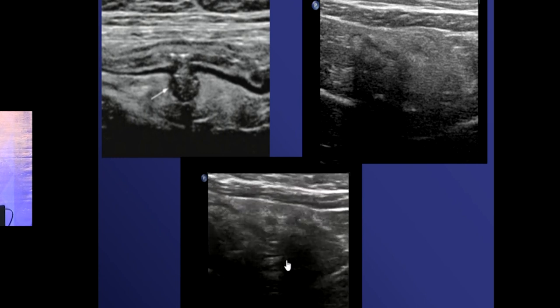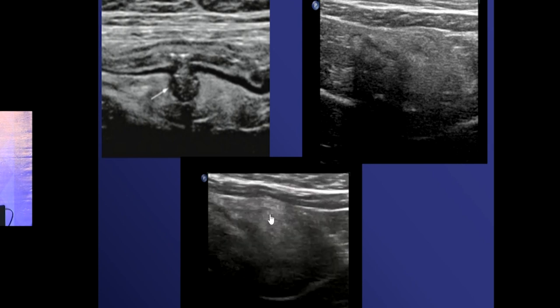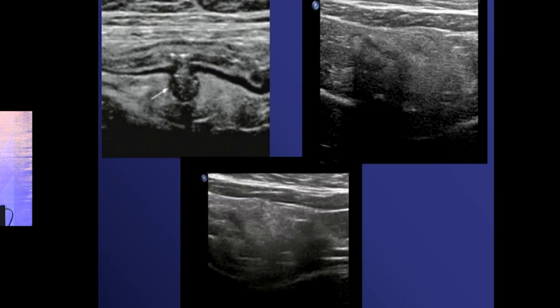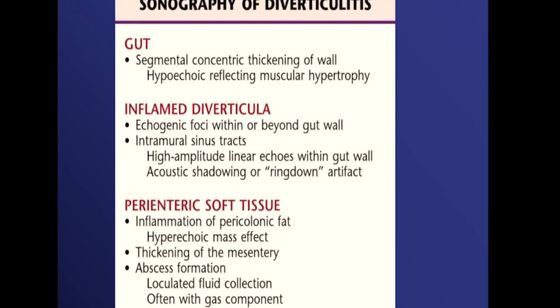It becomes difficult to apply compression because patients are in extreme pain, but if you can see an outpouching from the colon, that is likely a diverticulum — CT scan is advised. Diverticulitis signs include segmental concentric thickening of the colonic wall (ascending, rectosigmoid, or descending colon), echogenic foci within or beyond the gut wall, intramural sinus tracts, pericolonic fat inflammation appearing as a hyperechoic mass, and possible abscess with gas component. Fistula formation may produce linear tracks to bladder, vagina, skin, or adjacent loops.